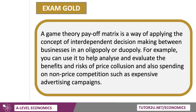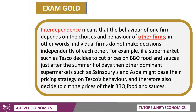The idea behind this video is to work through two examples of payoff matrices you could use really well in an exam question. Interdependence — please do use that keyword if you get any question on oligopoly and behavioural firms. It means that the behaviour of one firm depends on the choices and behaviour of other firms. A good example: think about the supermarkets. Tesco cuts prices on barbecued food; the other supermarkets might decide to do the same. That kind of interdependent pricing is very common in supermarkets, streaming services, mobile phone tariffs, petrol retailing, and so on.